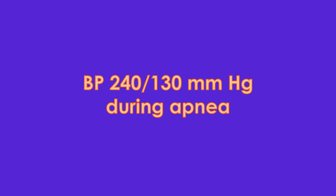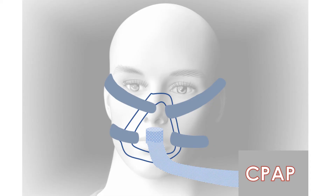Apnea episodes can be associated with severe rise in blood pressure, even to levels of 240/130 mmHg. This is associated with hypoxia, hypercapnia, and adrenergic activation in obstructive sleep apnea and can promote cardiovascular disease. Heart rate variability is reduced in those with obstructive sleep apnea. There is also release of endothelin, which could be reduced by giving continuous positive airway pressure (CPAP). Oxidative stress, platelet activation, systemic inflammation with elevated C-reactive protein, and endothelial dysfunction have been thought to be due to repeated episodes of apnea.